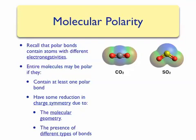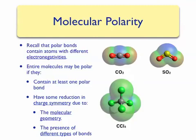Another way to reduce the charge symmetry is the presence of different types of bonds. Carbon tetrachloride is a common organic solvent. If we look at carbon tetrachloride, we see that it's a tetrahedral molecule. We can also examine the carbon-chlorine bond and find that it is polar, with chlorine being much more electronegative than carbon. Although this molecule has polar bonds, it is not polar due to the high symmetry of a tetrahedral molecule.